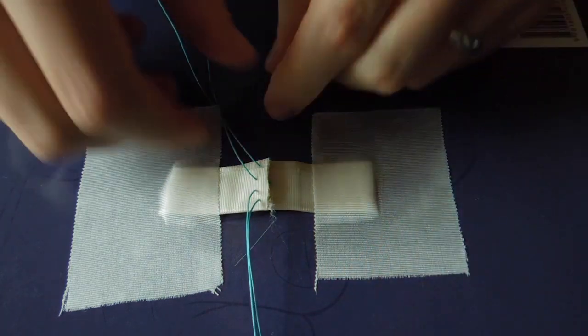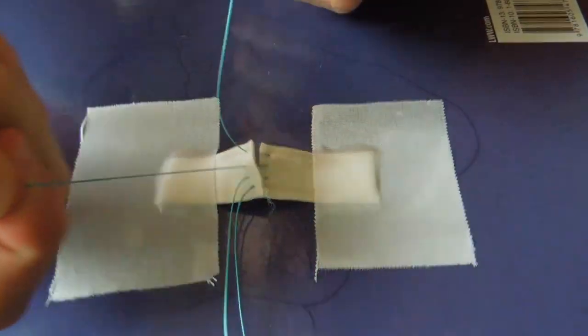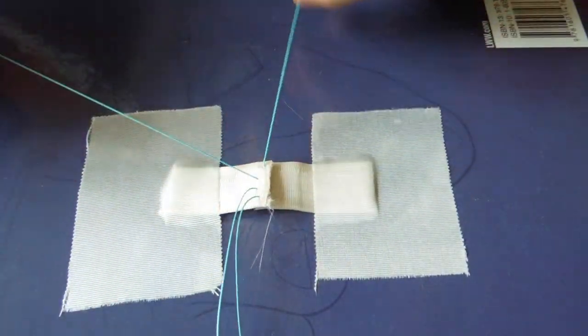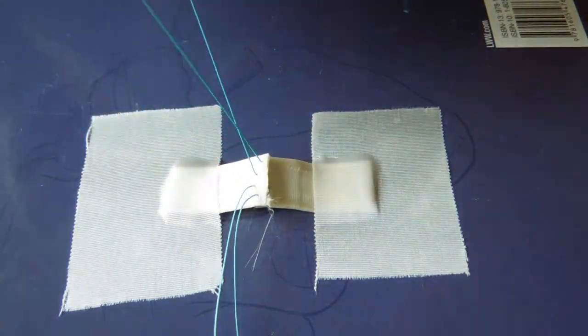When we pull that down, we see the overlap of the left side over the right side, and now we're going to individually tie each suture here with hand ties.